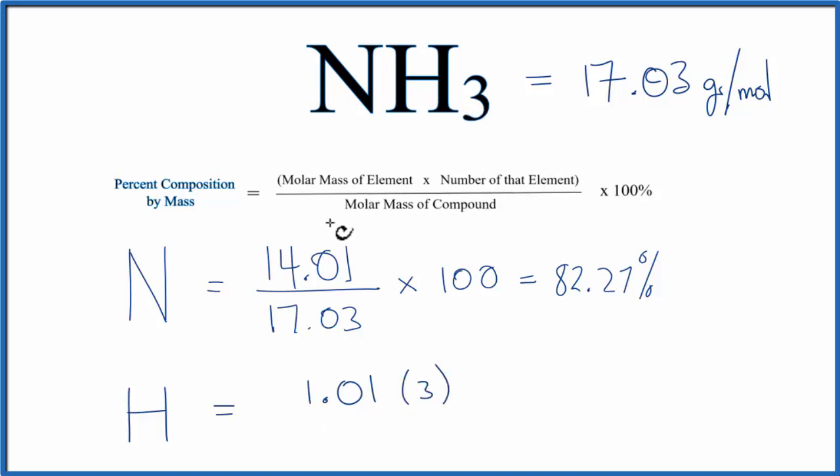We'll divide that by the molar mass for the compound. That's this right here. Multiply by a hundred and the percent composition for the hydrogen in NH3 equals 17.79%.